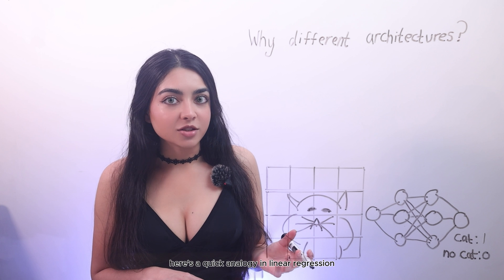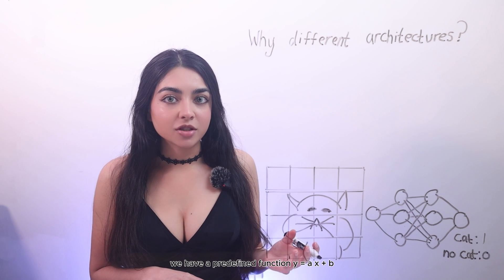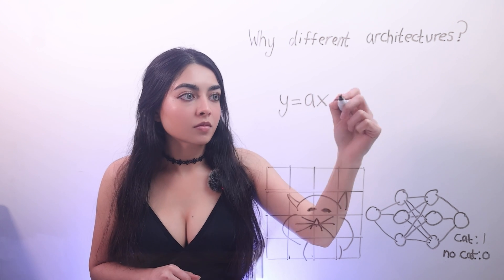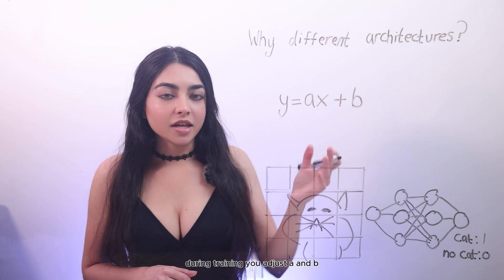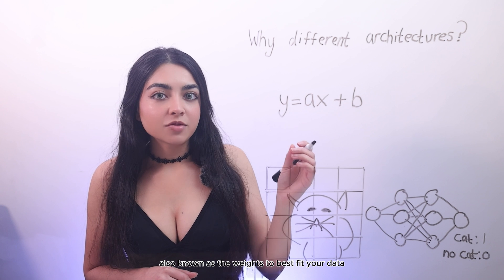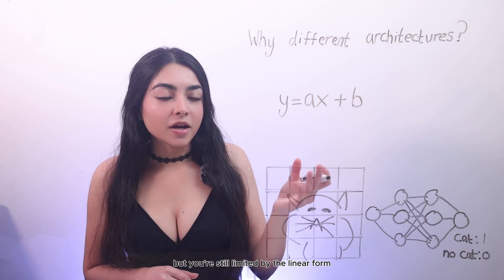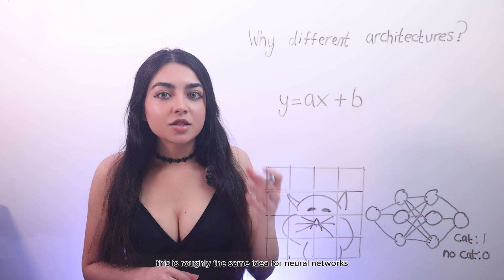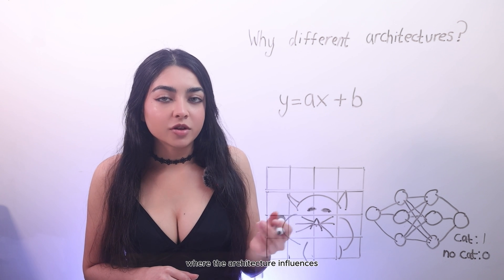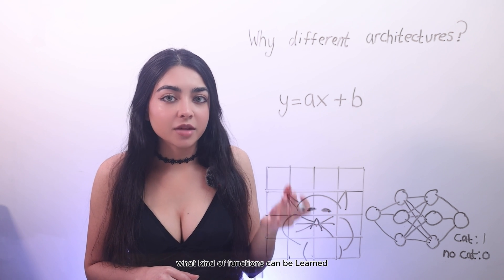Here's a quick analogy. In linear regression, we have a predefined function, y equals ax plus b. During training, you adjust a and b — also known as the weights — to best fit your data, but you're still limited by the linear form. This is roughly the same idea for neural networks, where the architecture influences what kind of functions can be learned.